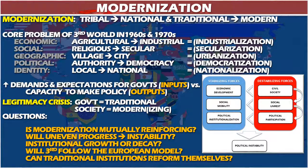Modernization also raised questions about its nature, because there were assumptions that the Third World would follow the same pattern as the United States and Western Europe. Is modernization mutually reinforcing? It's not one process but a series of parallel processes — economic, social, political, cultural — that might reinforce each other or work at cross purposes. If there's an uneven process, it will lead to unstable institutions: you might have a first-class economy but a third-class culture not keeping pace with other developments.